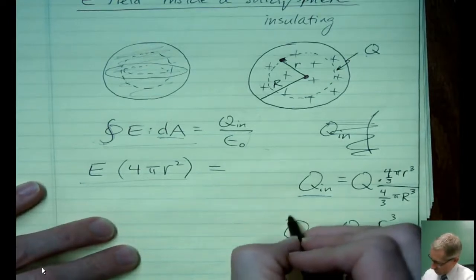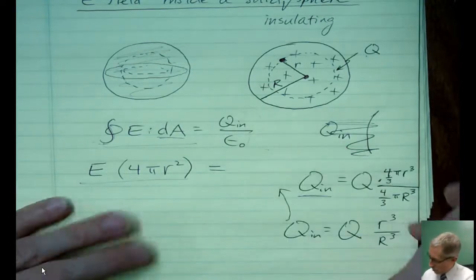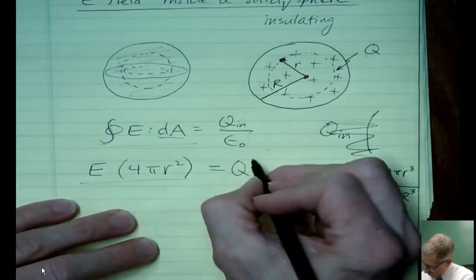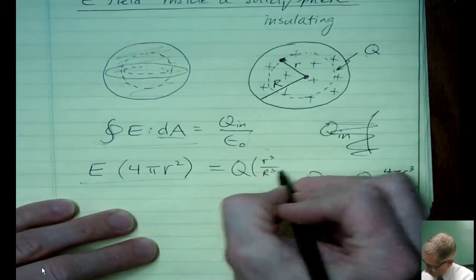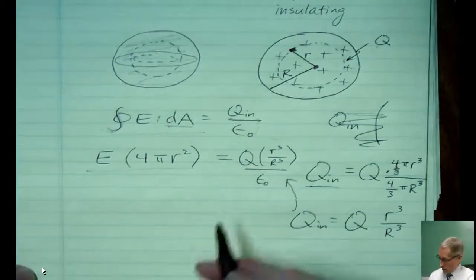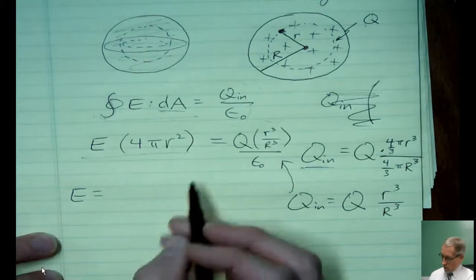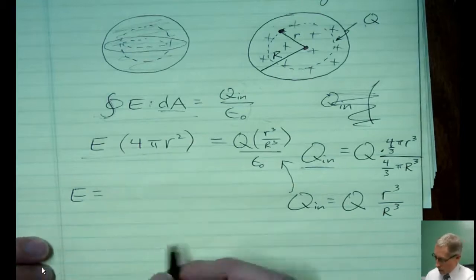So I'm going to put that in to the right side of the Gauss's law equation. So I have Q times little r³ over big R³ all over epsilon sub nought.